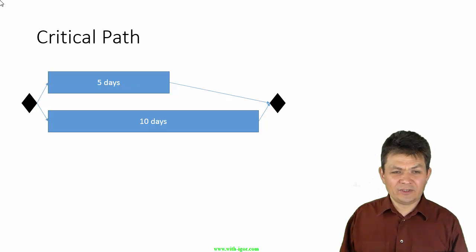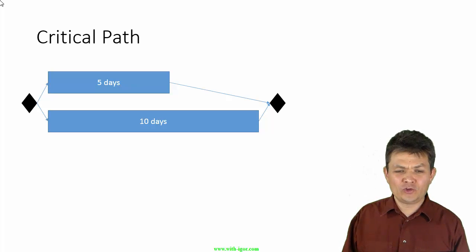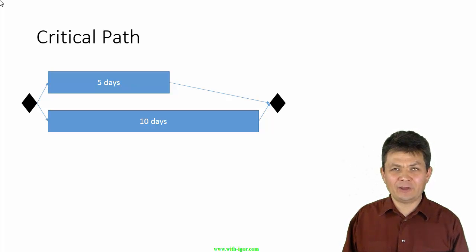So, let's take a look at it. We have a really simple schedule. We have two tasks that are not dependent. They are not sequential. No relationships between them.